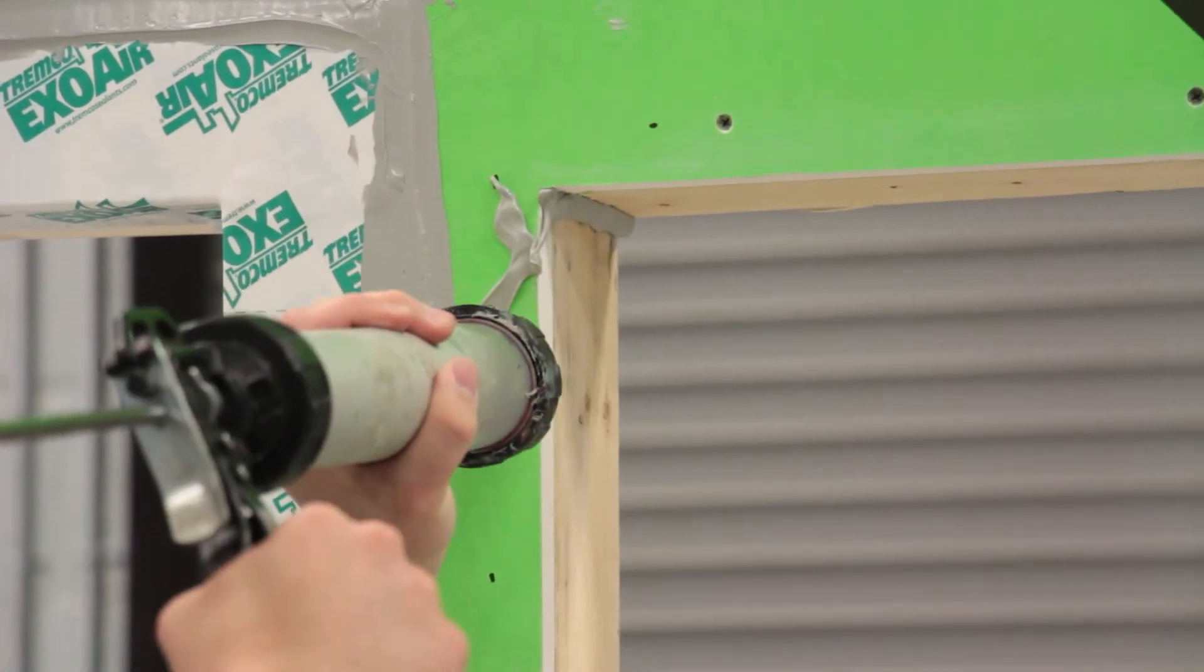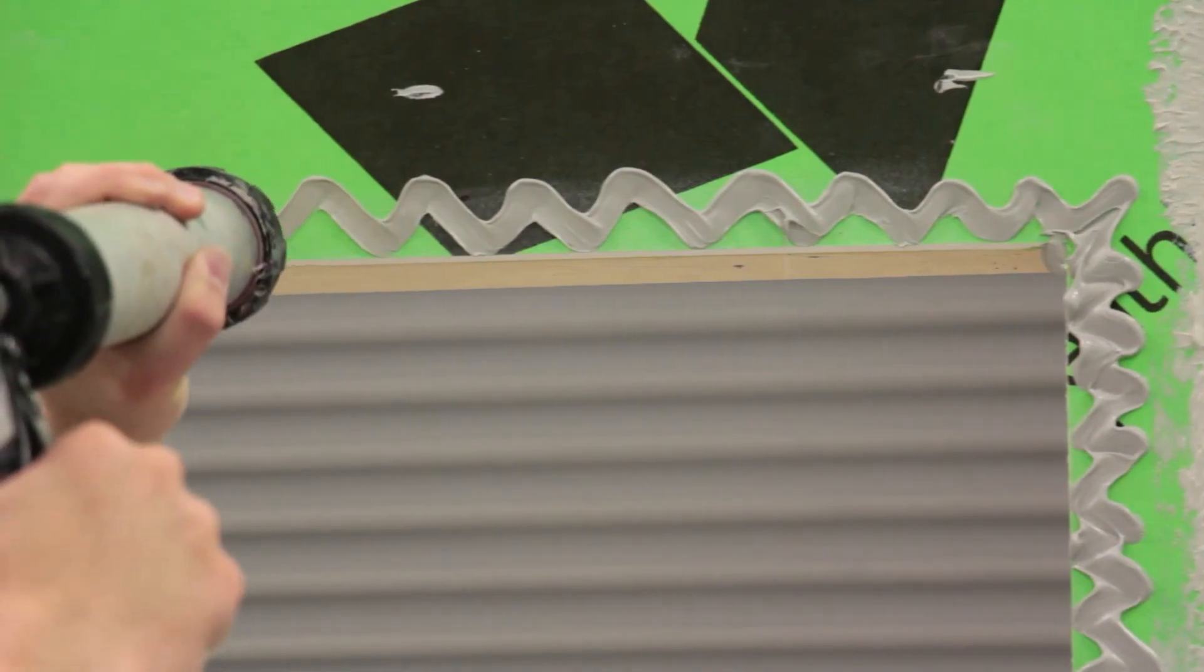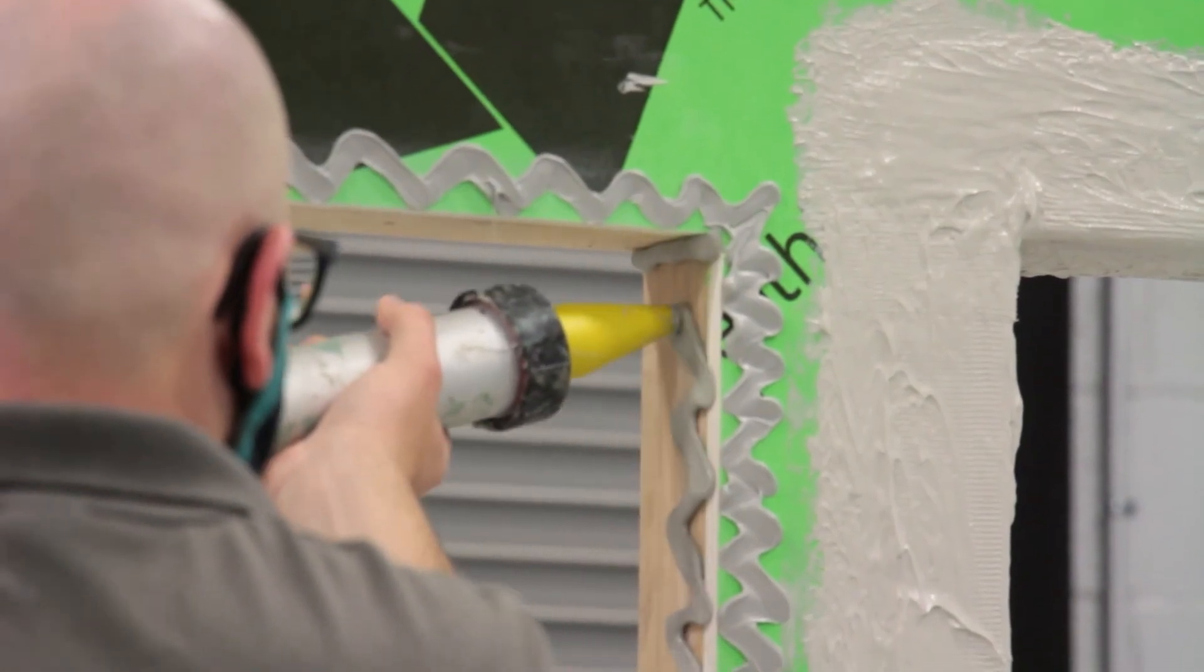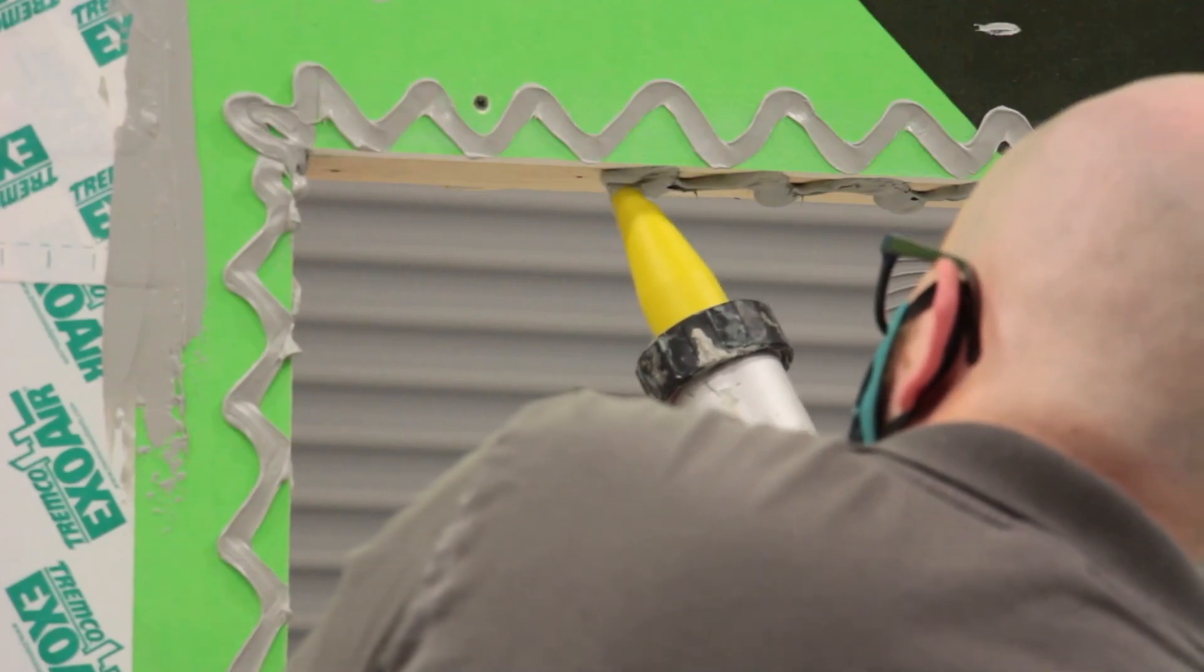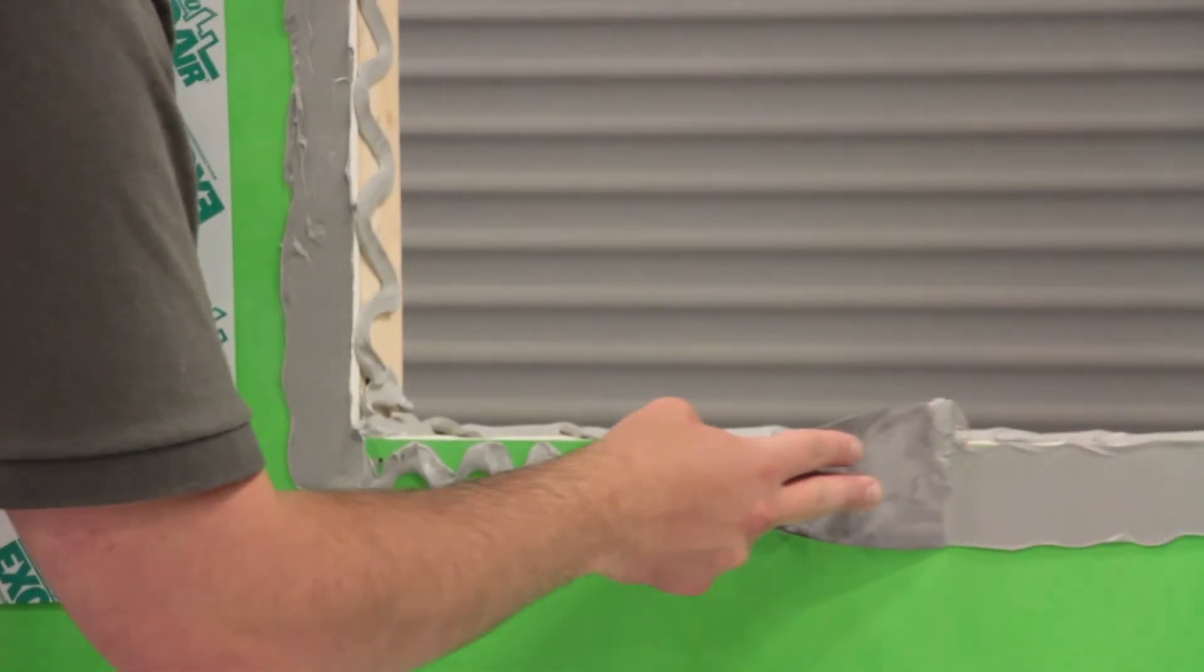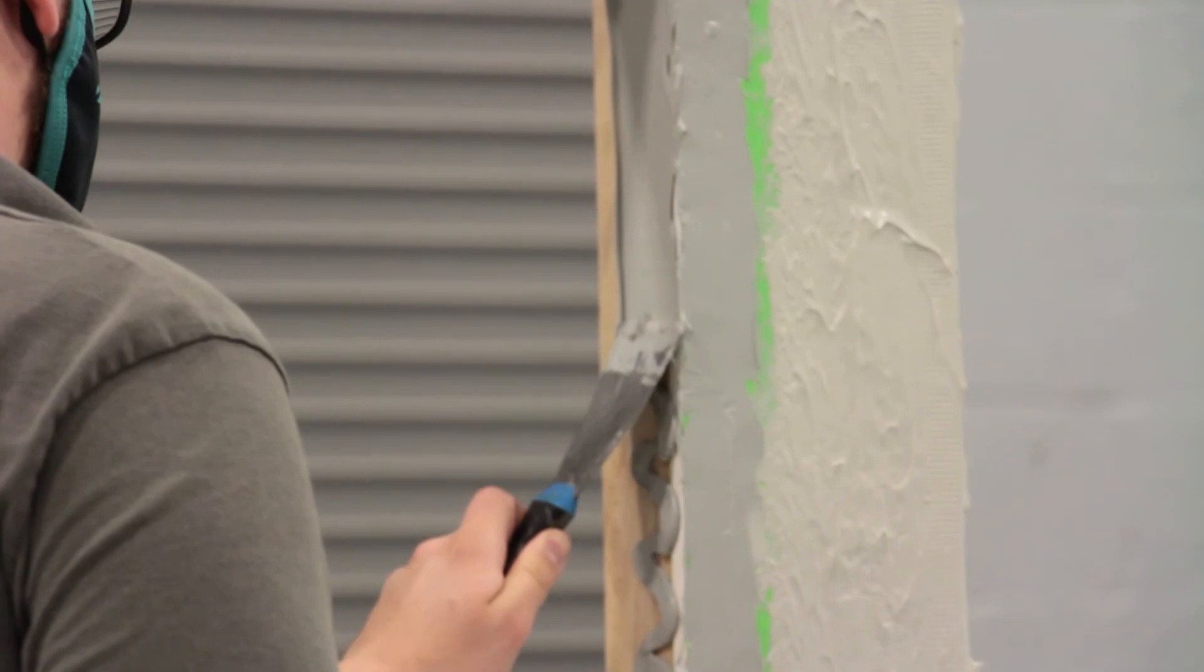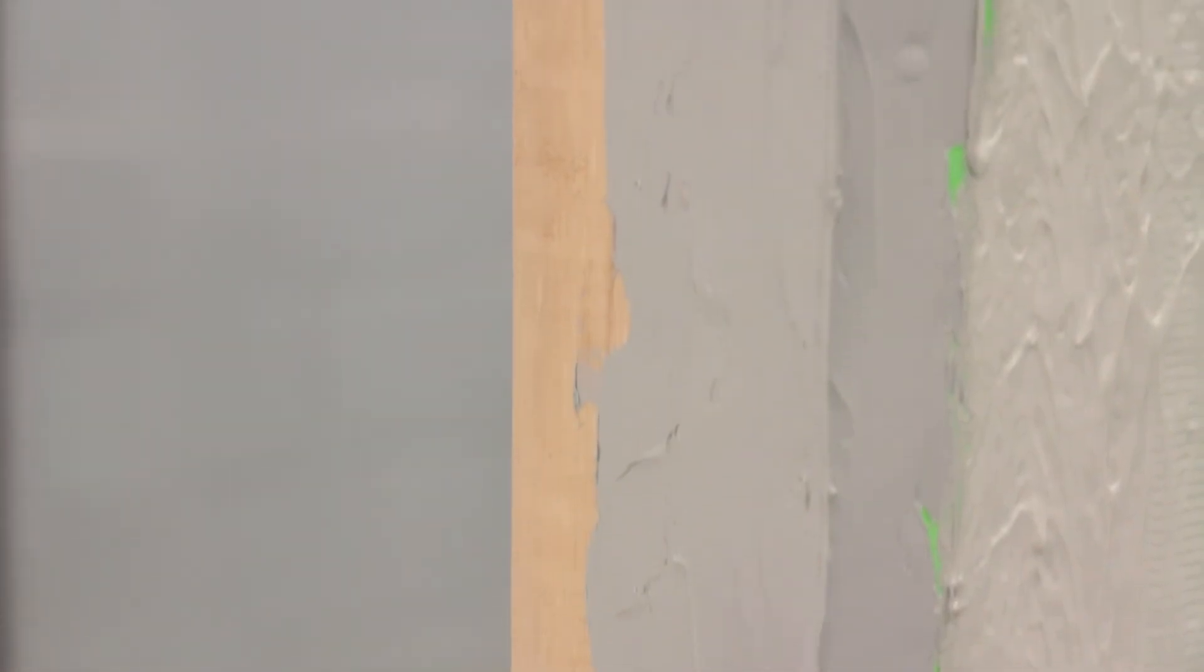Next, apply a zigzag pattern of the Dymonic 100 on the face of the substrate and into the rough opening, extending at least one inch past exposed edges. Using a trowel, tool the sealant down to 40 wet mills, ensuring a monolithic coating with no voids or openings. Use a mill gauge to confirm application thickness.